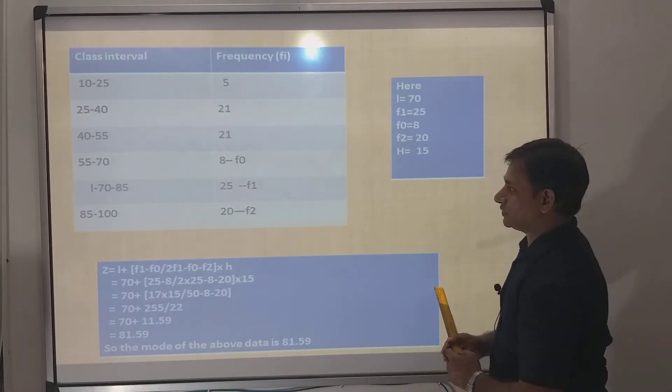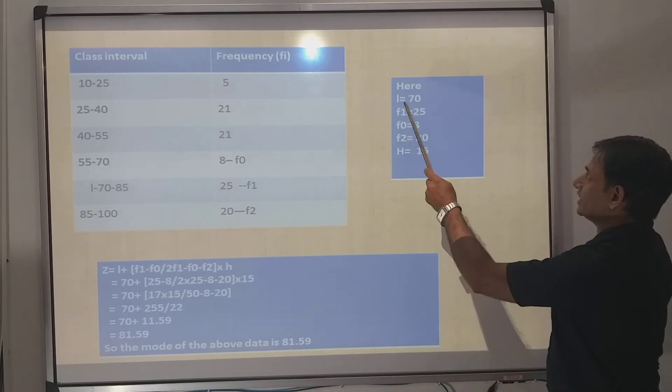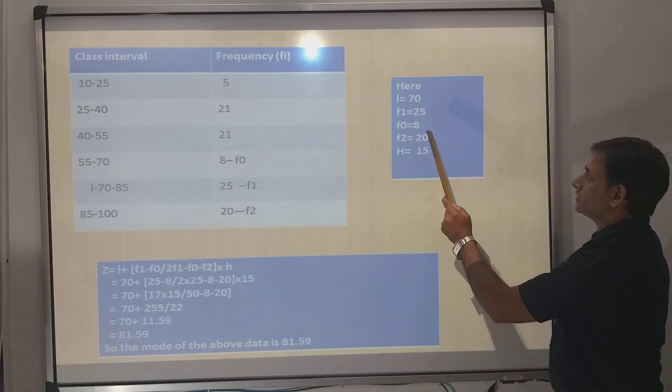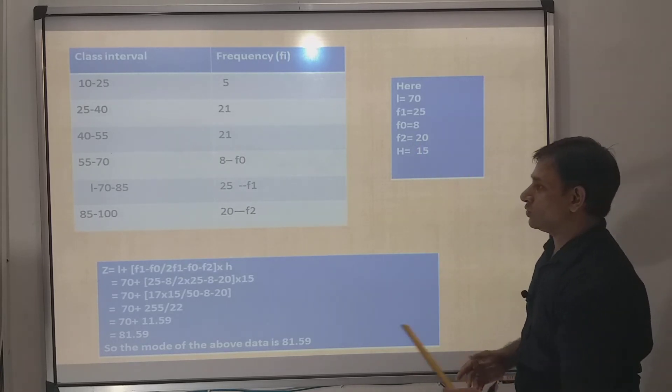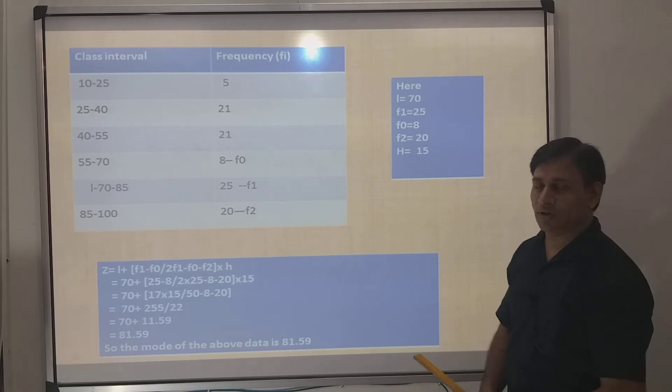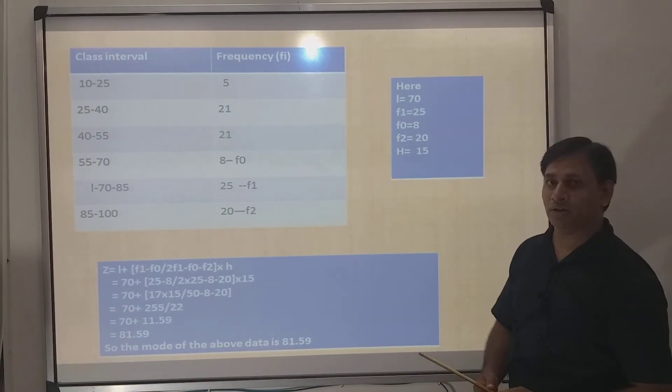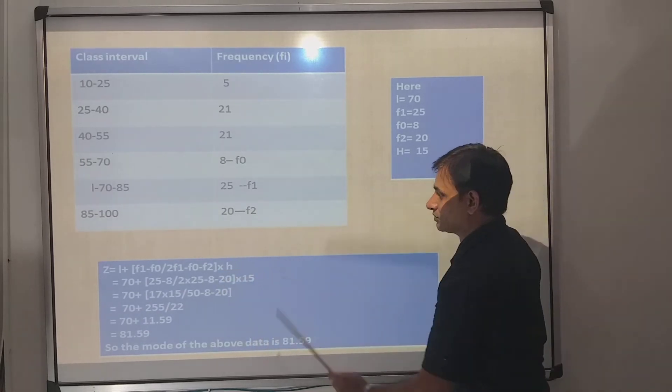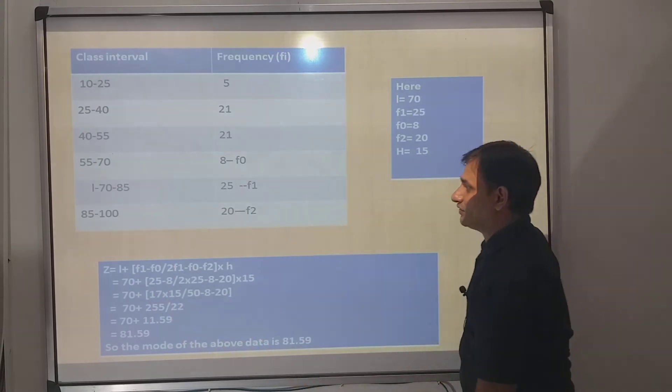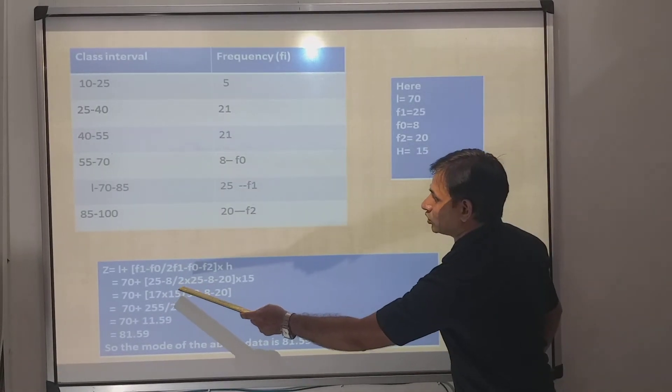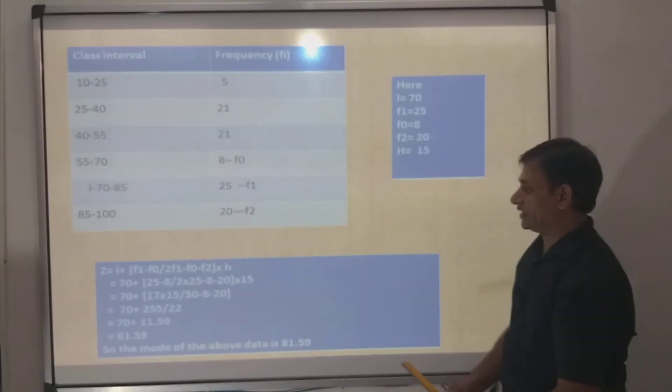The class corresponding to that is your lower limit. Preceding that is f0 and succeeding that is f2. I have elaborated here: l is 70, f1 is 25, f0 is 8, f2 is 20, and h is equal to 15. I'll put all this information. Z is equal to l plus f1 minus f0 upon 2f1 minus f0 minus f2 into h. Put the values: l is 70, f1 is 25, f0 is 8, upon 2 into 25 minus 8 minus 20, into 15.